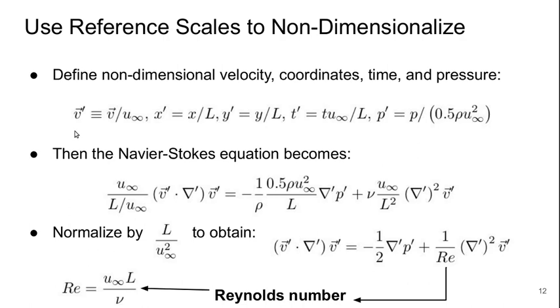We'll define the non-dimensional velocity as the velocity normalized by some reference velocity, which for an external flow is logically the free stream velocity, or the velocity far away from the vehicle.